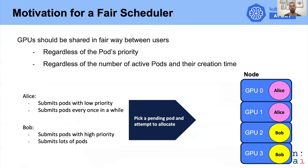So our motivation is to build a fair scheduler — one that knows how to share GPU resources between users in a fair way, regardless of creation time and pod priorities. We want that even in scenarios where Alice submits fewer pods and with lower priority, she would still get the same amount of GPUs as Bob.